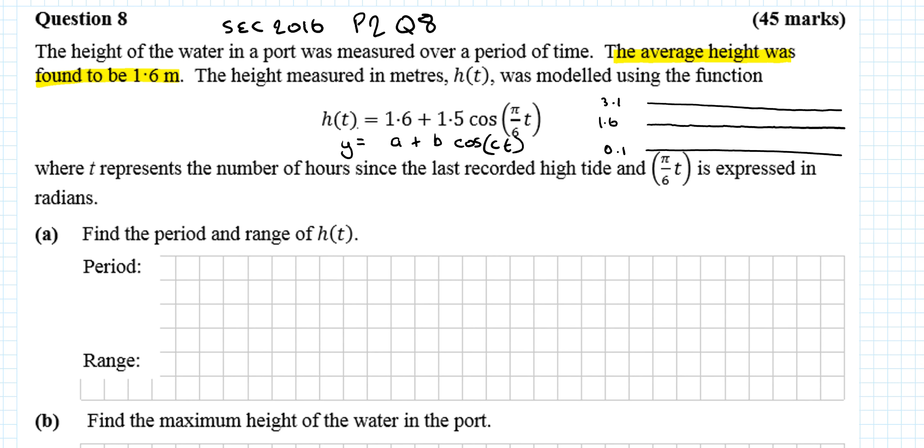Now, where does cos start? Cos does not start on the midway line. Cos starts above the midway line - depending on what b is, it might start above or below. Because b is positive, it starts above the midway line. If b was negative, it would start below. This distance here is the period - how long one full oscillation takes. c influences the period.